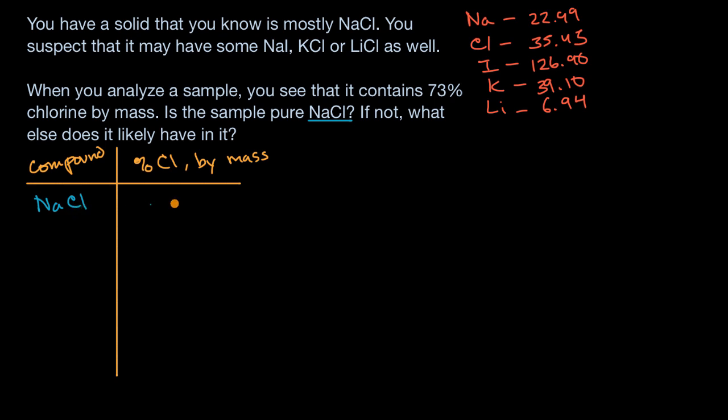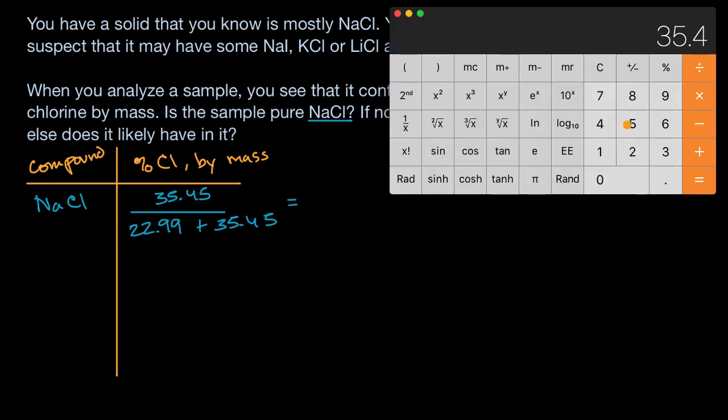So chlorine's molar mass is 35.45 grams per mole, and then we need to divide that by the molar mass of the entire compound. So that's going to be the molar mass of sodium at 22.99 grams per mole plus the molar mass of chlorine again at 35.45 grams per mole. So we have 35.45 divided by, open parentheses, 22.99 plus 35.45, close the parentheses, and then I get it equal.